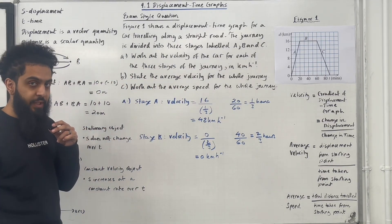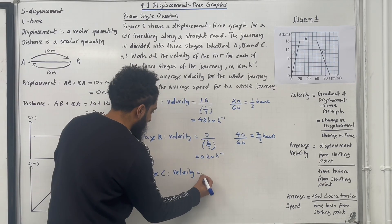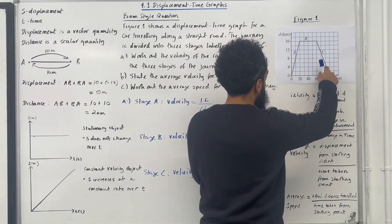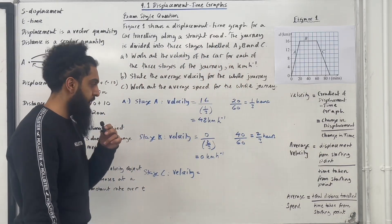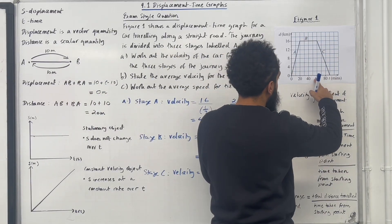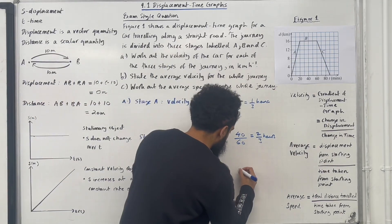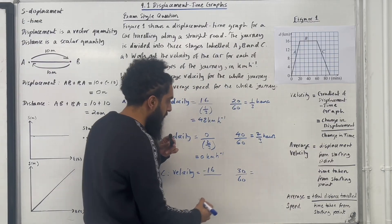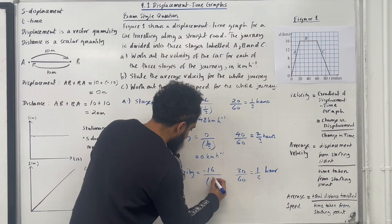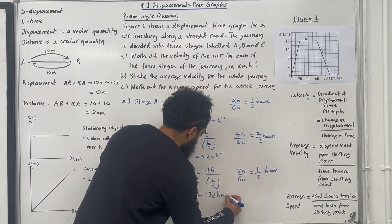Now Stage C. Velocity equals change in displacement over change in time. The change in displacement is minus 16 — we're going backwards. The change in time is from 60 minutes to 90 minutes, so 30 minutes. Converting to hours: 30 divided by 60 equals one half hour. So we have minus 16 over one half, which gives us minus 32 kilometres per hour.